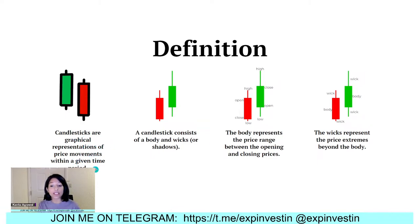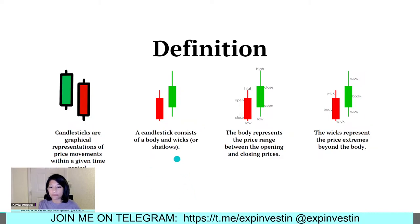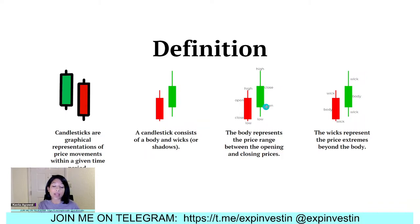Candlesticks are graphical representations of price movements within a given period of time. When it is green it means the prices advanced forward; when it is red it means they advanced backwards. A candlestick consists of a body and a wick, also called a shadow. The thick part is the body and the narrow part is the wick. The body represents the price range between opening and closing prices — a green candlestick closes higher than the open, and a red candlestick closes lower than the open.